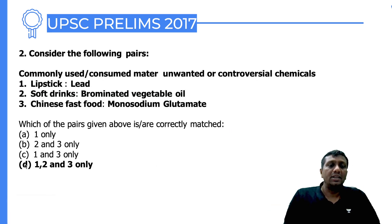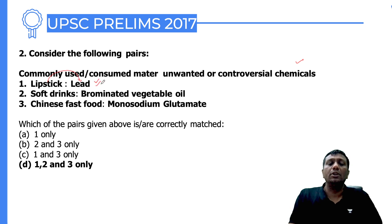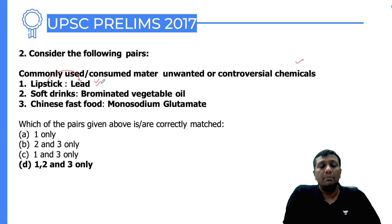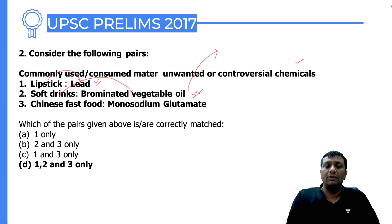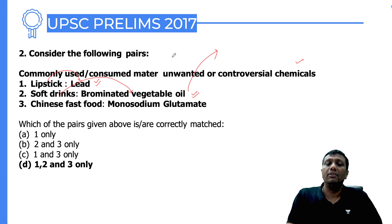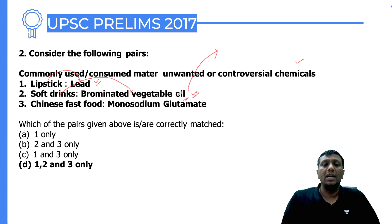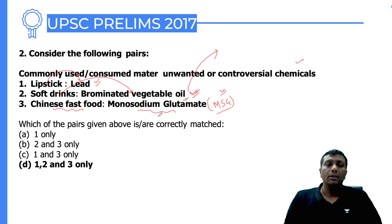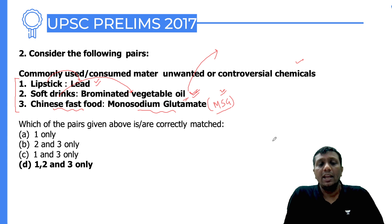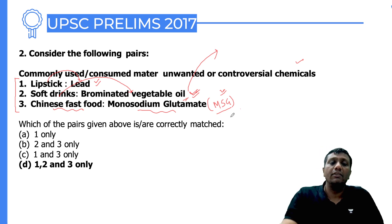The second question is a miscellaneous type about commonly used consumer items with unwanted or controversial chemicals. Lipstick contains lead — used for shining purposes even by some branded companies. Soft drinks contain brominated vegetable oil, used in orange-flavored drinks like Fanta and Miranda. Chinese food items contain MSG (monosodium glutamate) as a taste enhancer. All three statements are right. In the case of Maggi noodles in India, two issues were raised: lead content and MSG content.